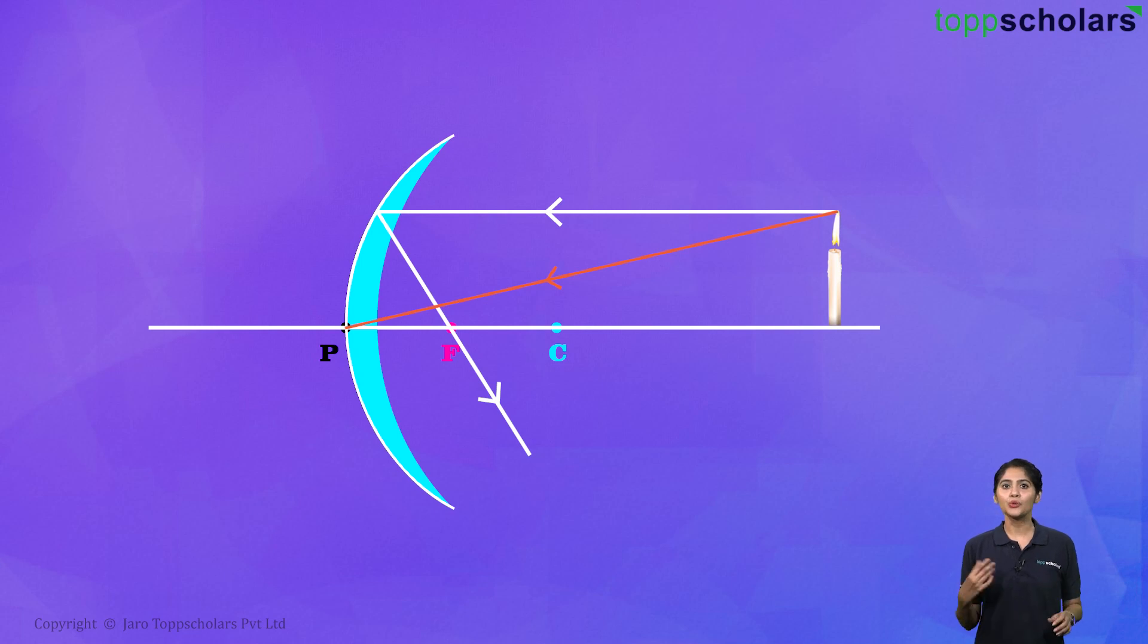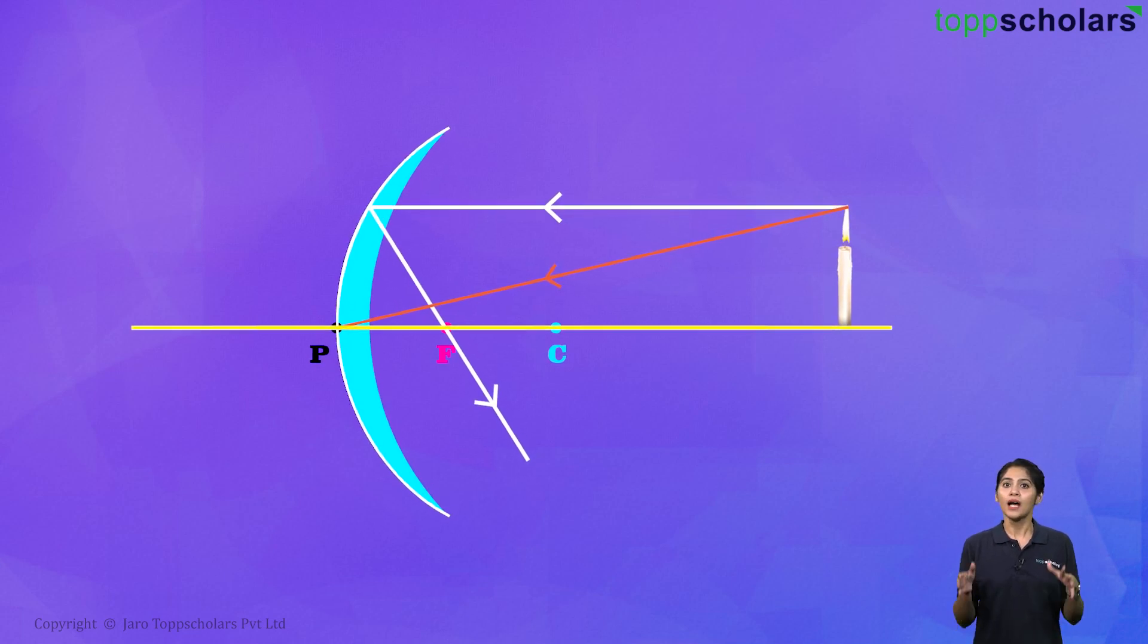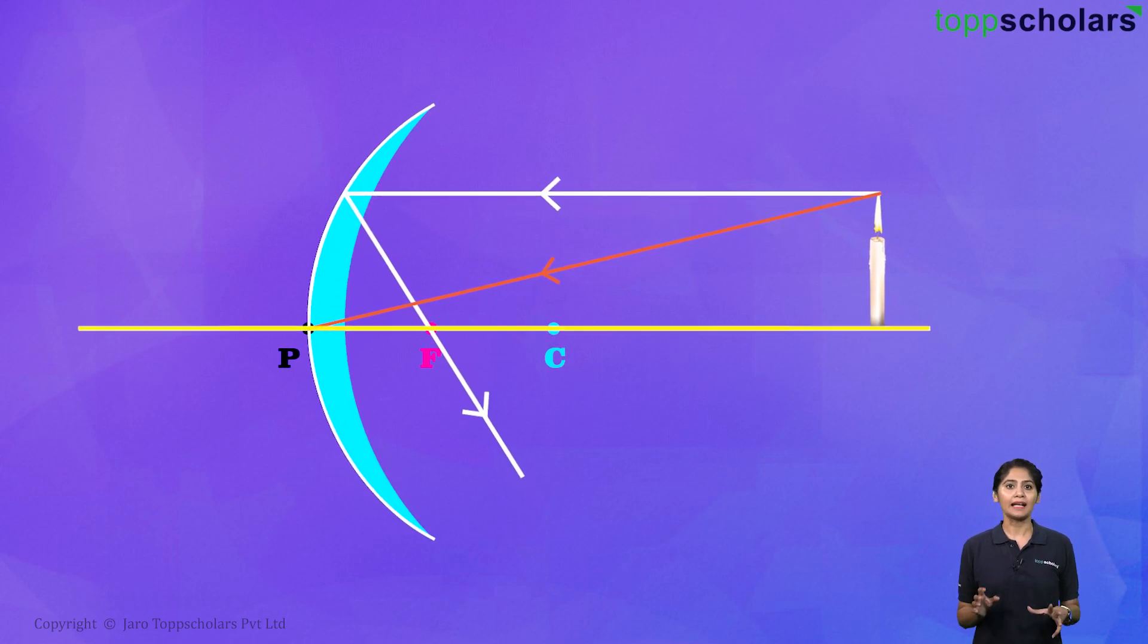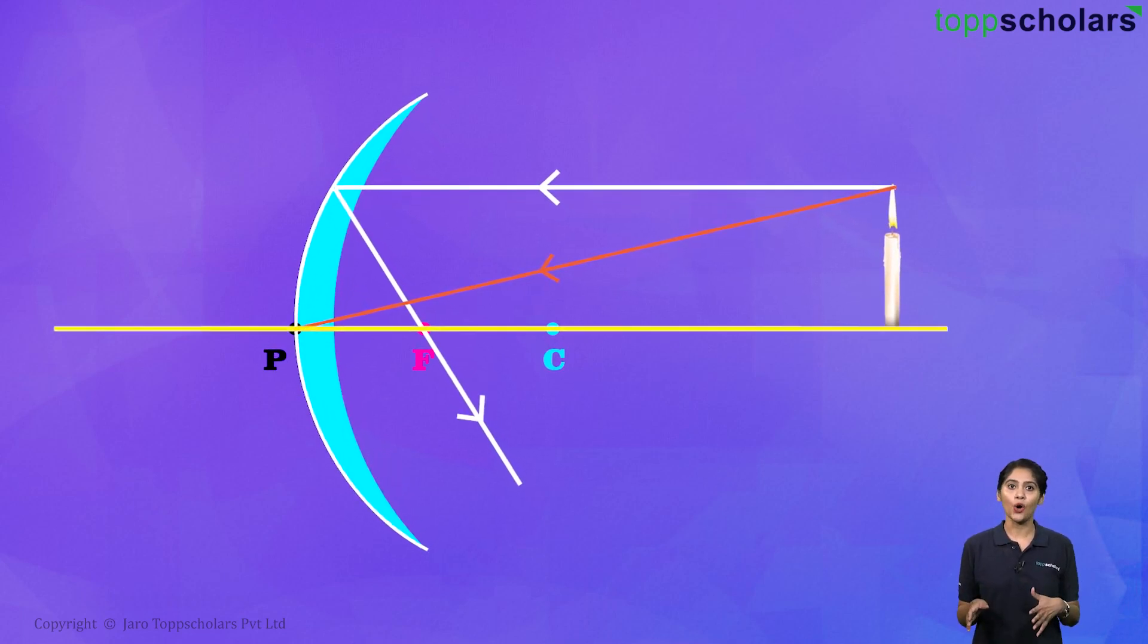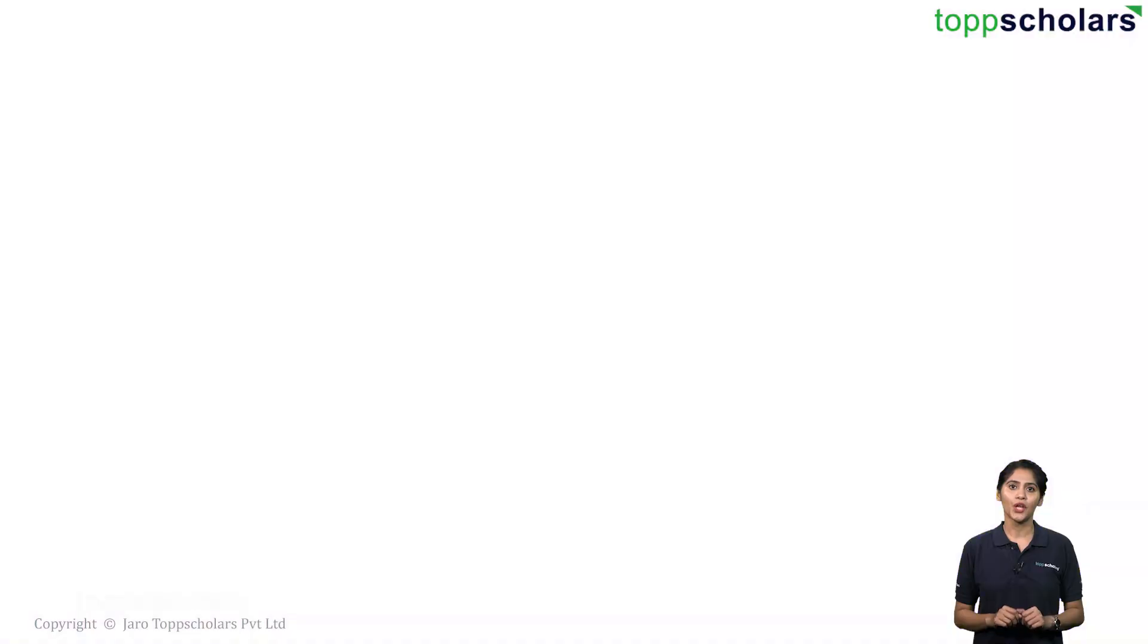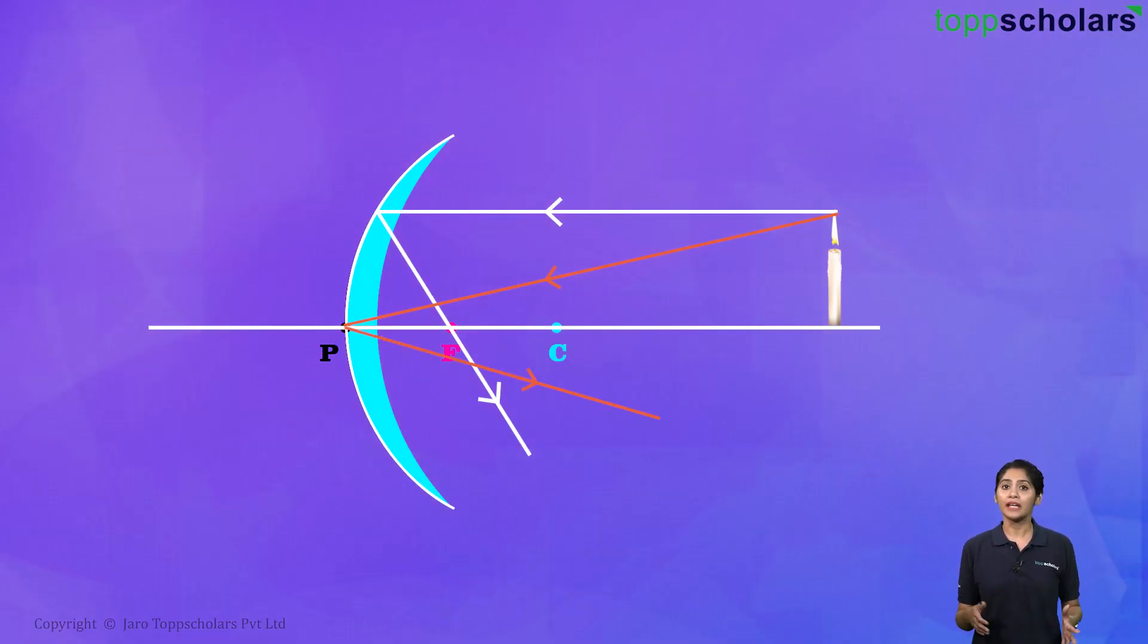For this ray, you see the principal axis forms the normal at the pole because the principal axis passes to the centre of curvature. And we can easily see the angle of incidence here. So after reflection, the ray of light will just go somewhat like this, keeping the angle of reflection the same. So it goes somewhat this way.